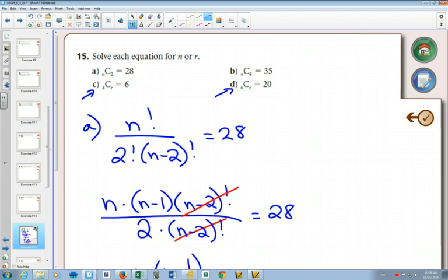So then you try six choose two, and you find out that that's 15. So you know it has to be more than that. So you try six choose three, and then that one works out to be 20. So then you'd be able to say that r equals three.